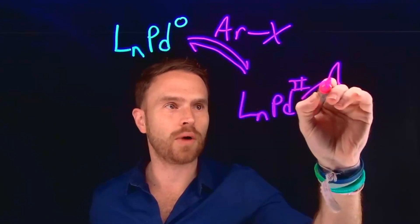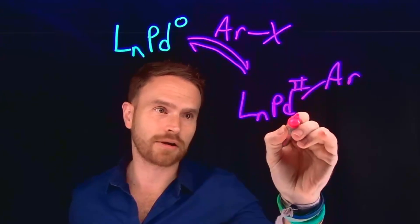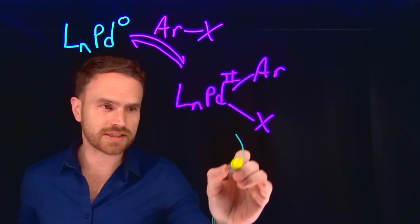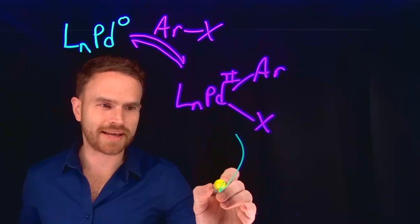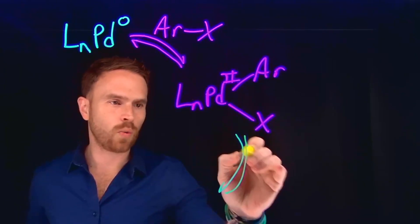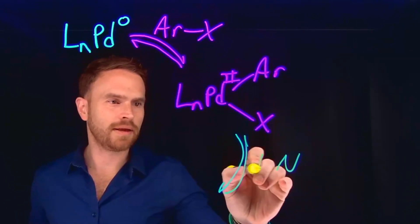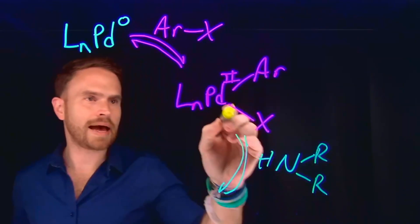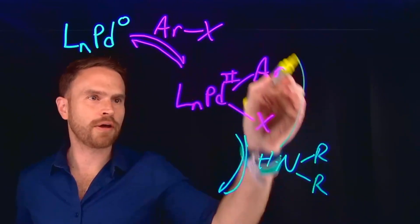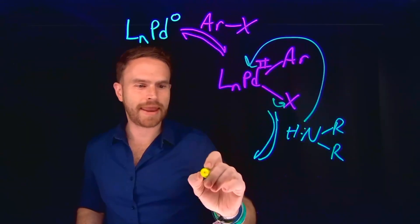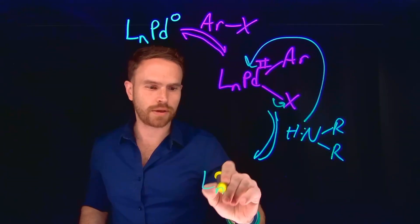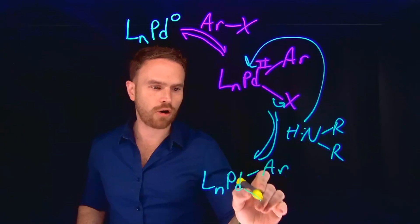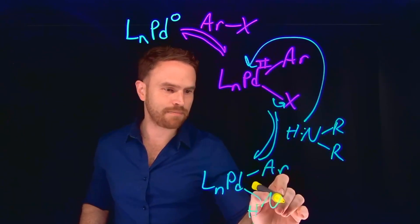Now the new aryl group is acting as a ligand on palladium as well as the halide. The next step is generally considered to be like a nucleophilic displacement where the amine can come in and replace the halide, allowing us to kick off the halide. Now we are left with palladium, which is bound still to the aryl group but also the amine.